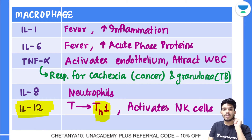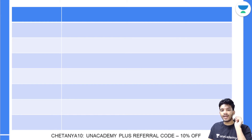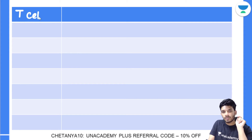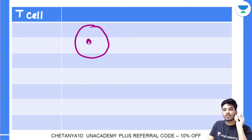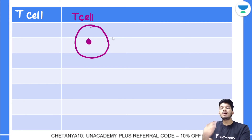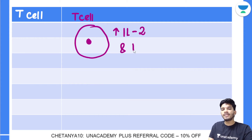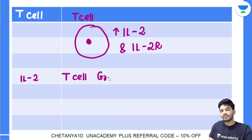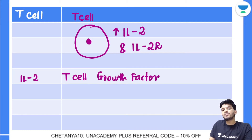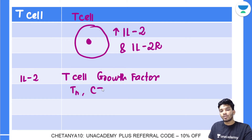Now let's look at interleukins secreted by T cells. Interleukin-2 is called the T cell growth factor. After a T cell receives its two co-stimulatory signals, through the calcium-calcineurin pathway it increases IL-2 secretion and IL-2 receptor expression. Interleukin-2 is critical for the growth and proliferation of all T cell types — helper T cells, cytotoxic T lymphocytes, regulatory T cells, and even NK cells.